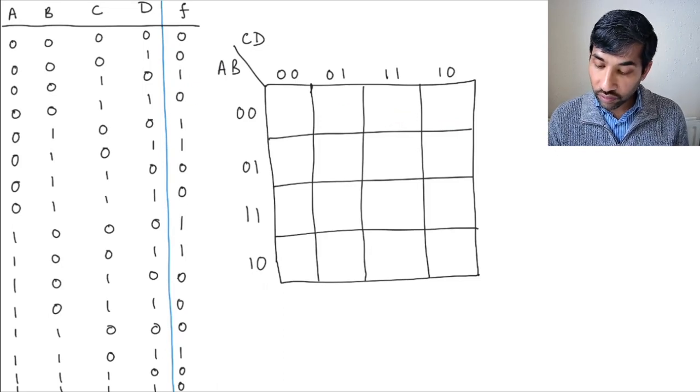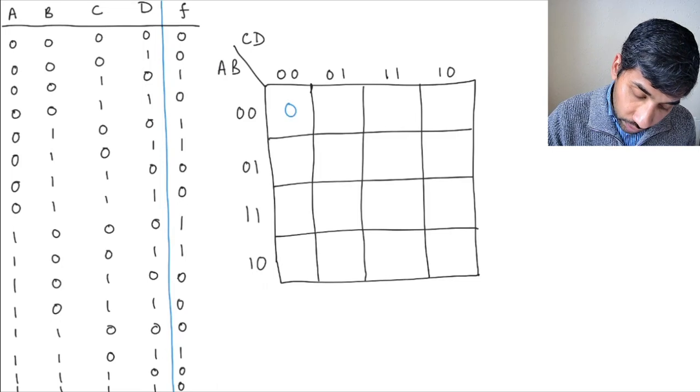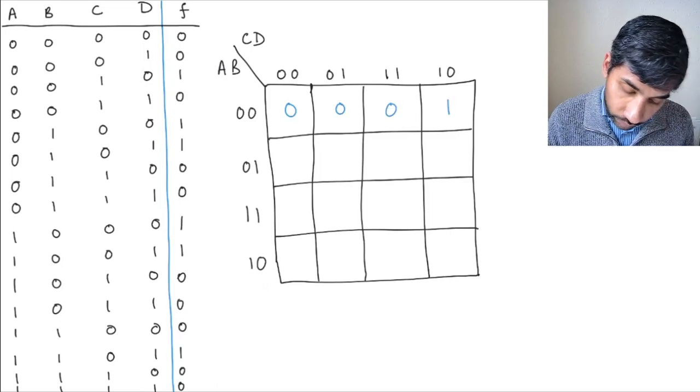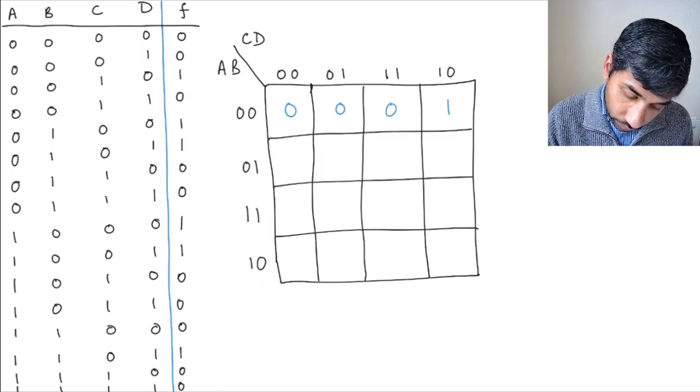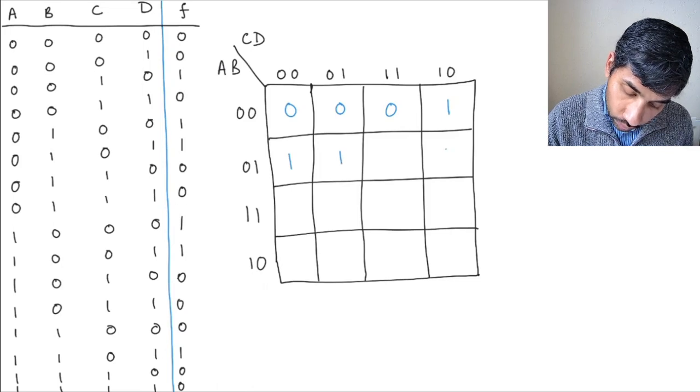So let's just fill this up. So you have 0, 0, 1, 0, and then you have 1, 1, 0, 0.